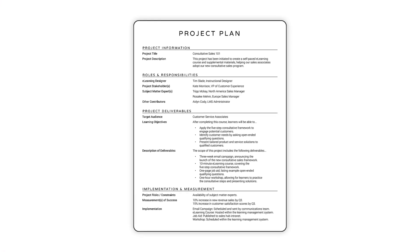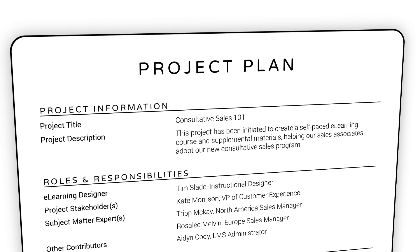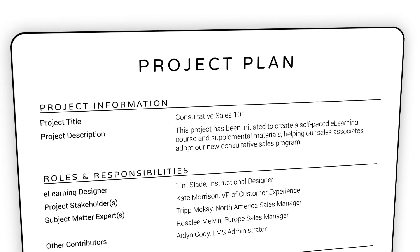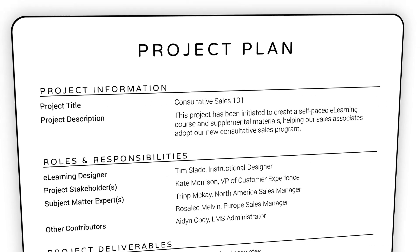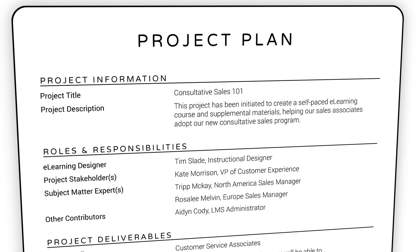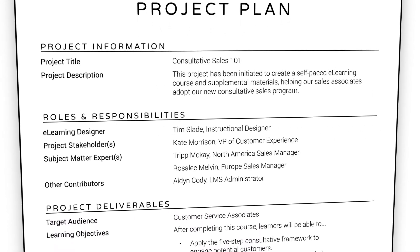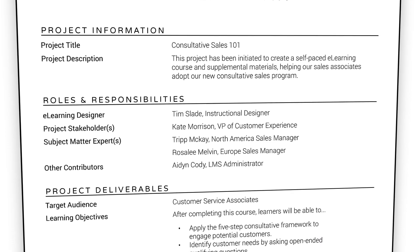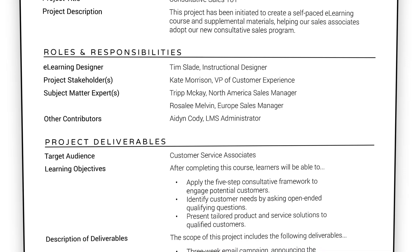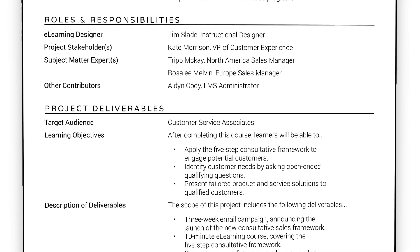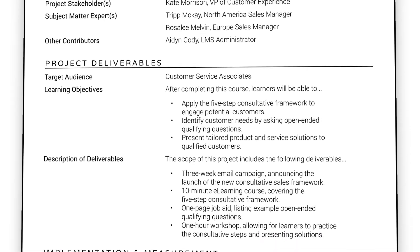Your project plan should include enough information to give anyone a strong sense of what the project aims to achieve and the deliverables that will result from the project. When I create a project plan, I like to start by documenting the basic project information, like the project title and a short description of the project itself. From there, I like to create an outline listing everyone involved in the project, including their roles and responsibilities. I also always document the deliverables of the project — for example, who the target audience is and what the learning objectives are for the course.